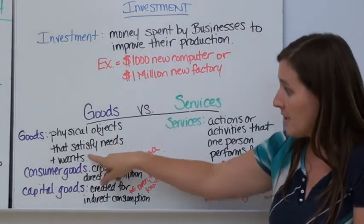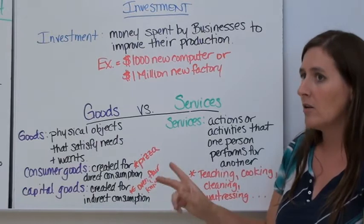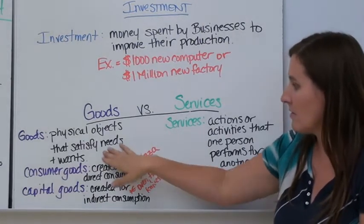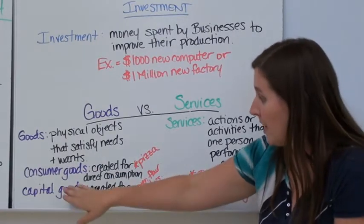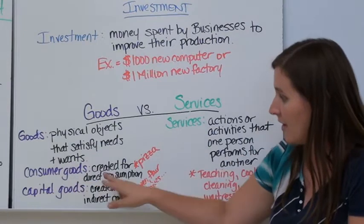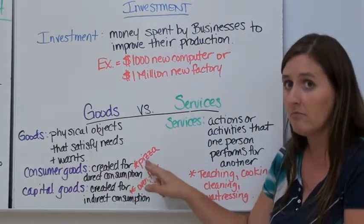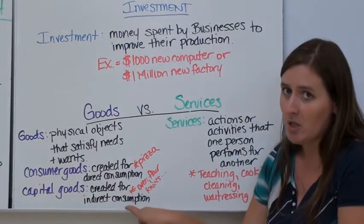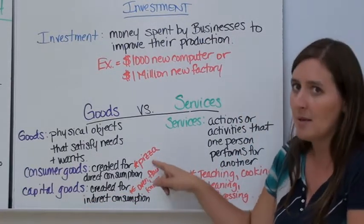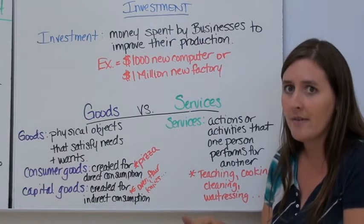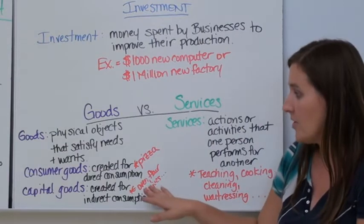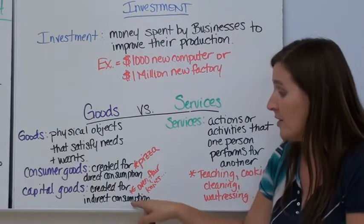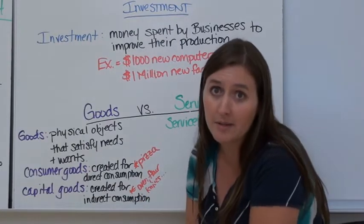Goods are physical objects that satisfy needs and wants — bread, milk, iPhones, shoes, t-shirts, desks, pencils. They break into two categories: consumer goods, created for direct consumption like the pizza you buy at a shop; and capital goods, created for indirect consumption — the ovens, flour, and knives the shop uses to make the pizza.